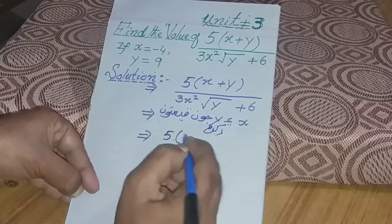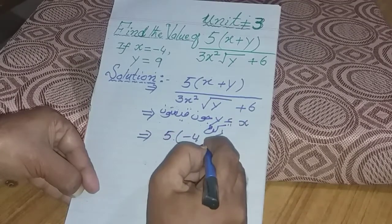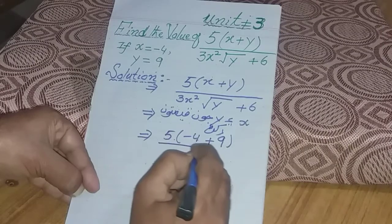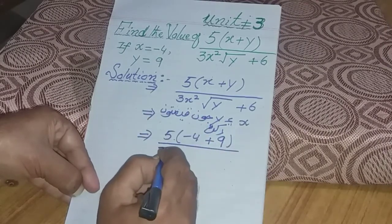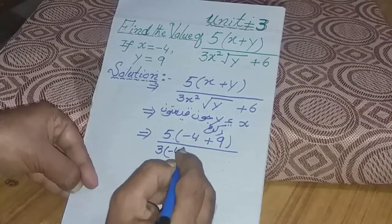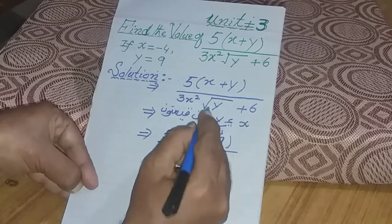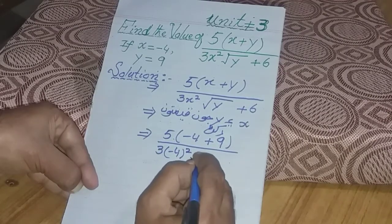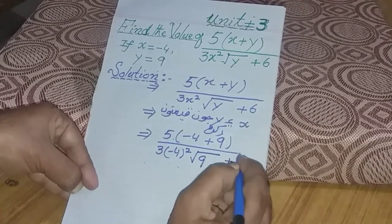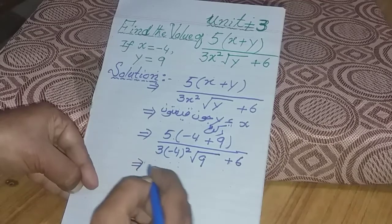5 bracket x is minus 4, so we substitute minus 4 for x. Plus, 3 bracket x is minus 4, so x squared where x is minus 4. Then radical 9 plus 6.